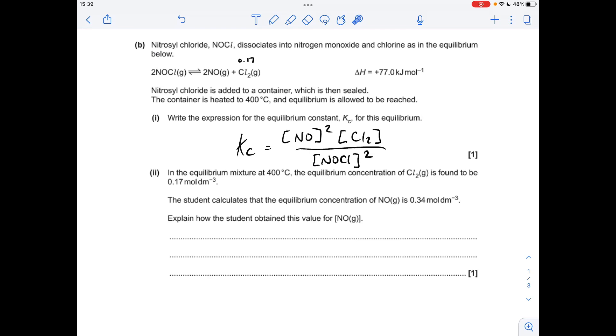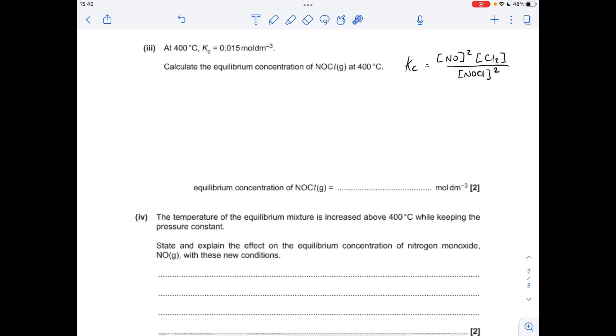so the equilibrium concentration of chlorine is found to be 0.17 moles per decimeter cubed. So I've written that above the chlorine there. Where's the student got this 0.34 from? Well, it's from the mole ratio. So if you've got 0.17 moles of that, you'll have double the moles of that.